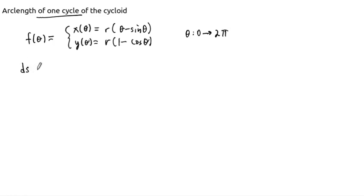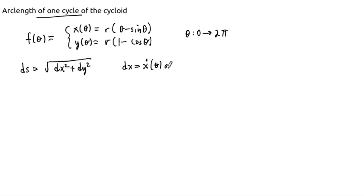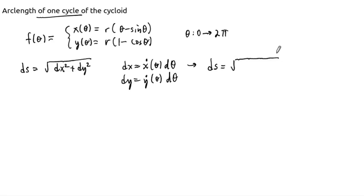Remember that the arc length element ds is equal to the square root of dx squared plus dy squared, and that dx equals x-dot of theta d-theta, and dy equals y-dot of theta d-theta. Putting this all together, ds equals the square root of x-dot squared plus y-dot squared, times d-theta. This is what we have to integrate to find the arc length of one cycle of the cycloid.